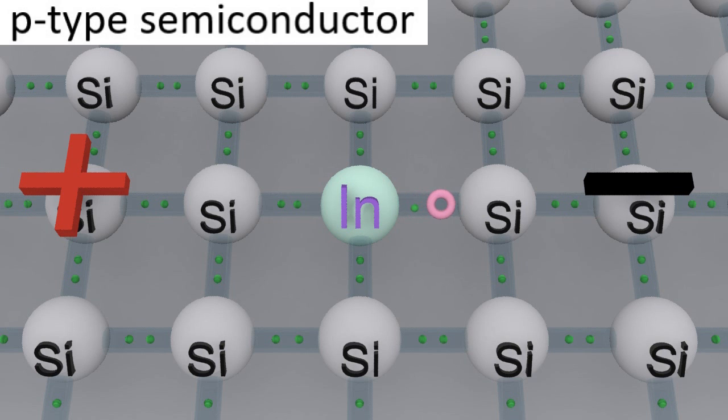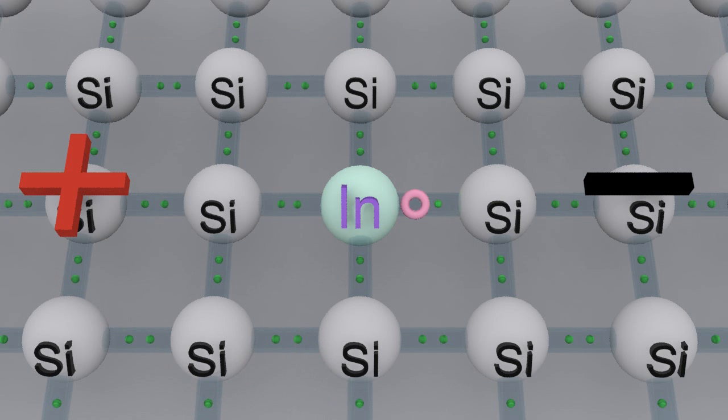So why is it called p-type? Well, the lack of an electron you can think of as something positive. The lack of a negative is a positive, and that's where that p comes from. This hole is moving as well as the electrons.